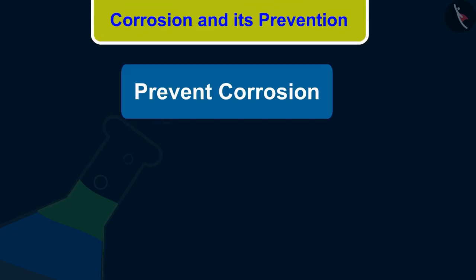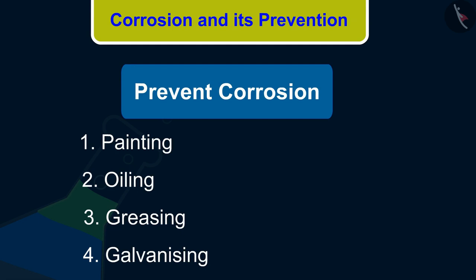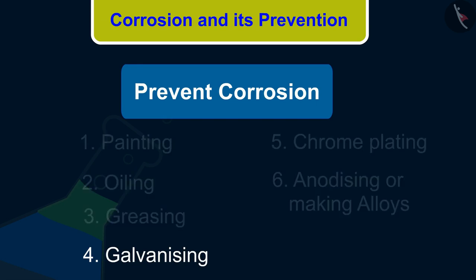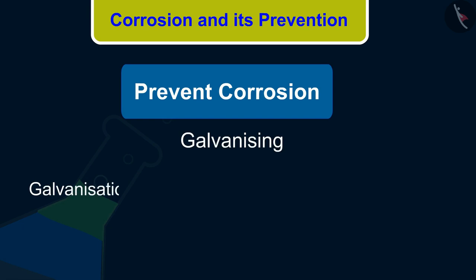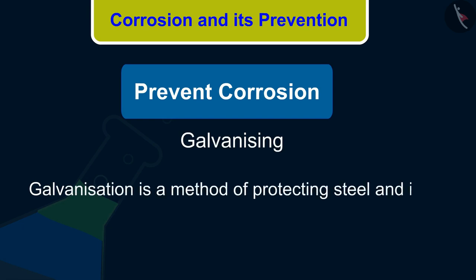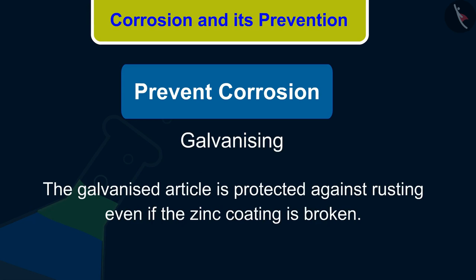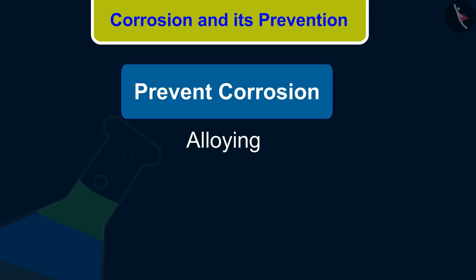The rusting of iron can be prevented by painting, oiling, greasing, galvanizing, chrome plating, anodizing, or making alloys. Galvanization is a method of protecting steel and iron from rusting by coating them with a thin layer of zinc. The galvanized article is protected against rusting even if the zinc coating is broken.